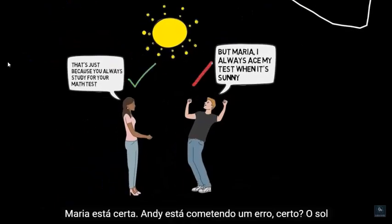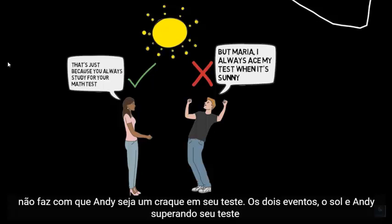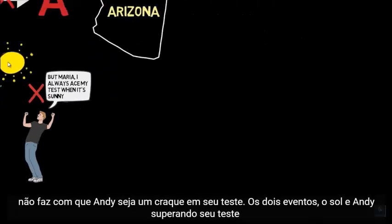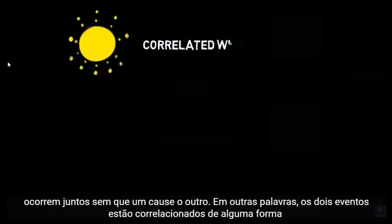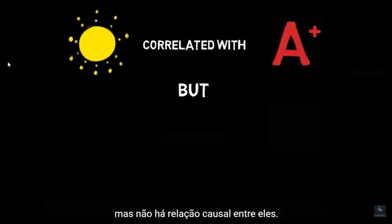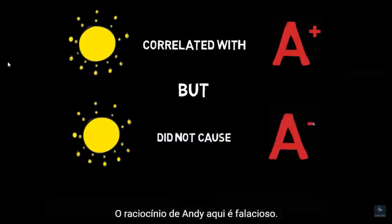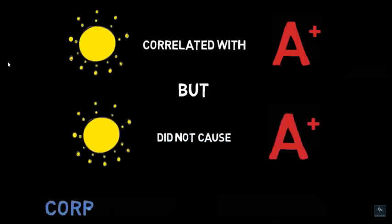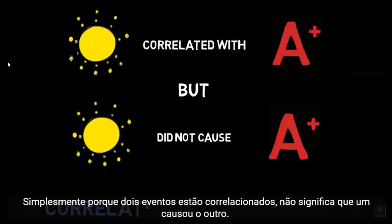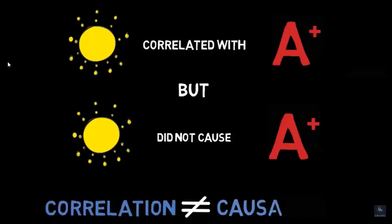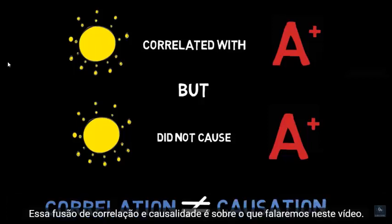Maria's correct. Andy's making a mistake — the sunniness doesn't cause Andy to ace the test. The two events, the sunniness and Andy acing his test, occurred together without one causing the other. In other words, the two events are correlated in some way, but there's no causal relation between them. Andy's reasoning here is fallacious: simply because two events are correlated does not mean that one caused the other. This conflation of correlation and causation is what we will talk about in this video.